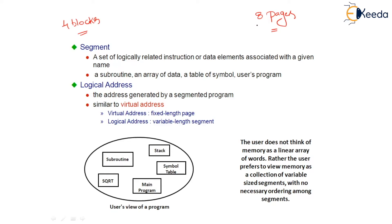In the memory, what are we going to store? We are going to store programs. Everything is referred to as a program — it could be a movie, a Java program, a video, or a game. Whatever you refer to in computer science, it's just a program when it comes to getting stored in memory. Now the problem is page sizes are fixed — one page is equal to 1K.